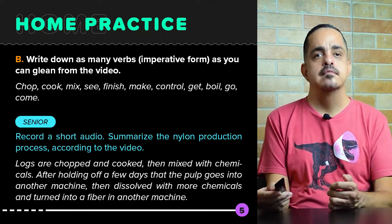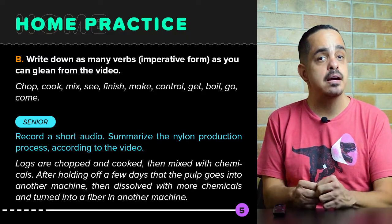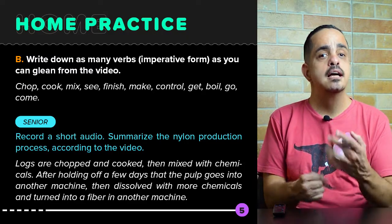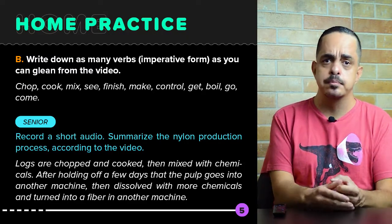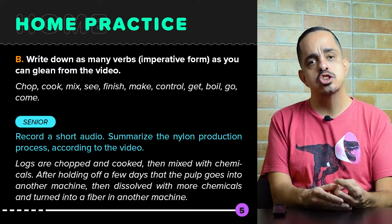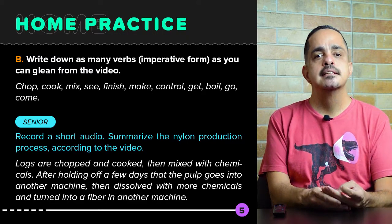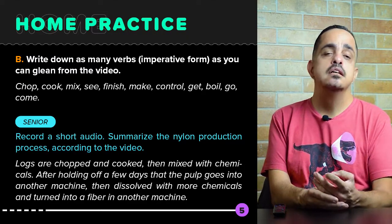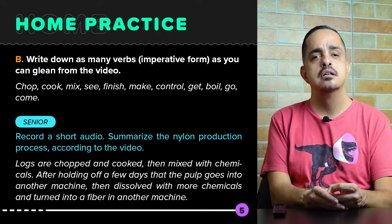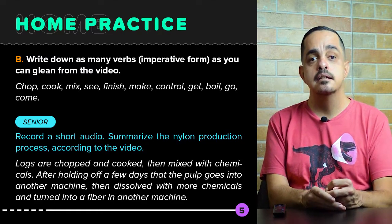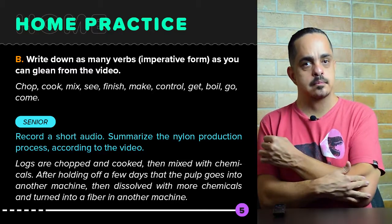On letter B, you guys had to write down as many verbs in the imperative form as you could get from the video. Some examples: chop, cook, mix, see, finish, make, control, get, boil, go, and come.